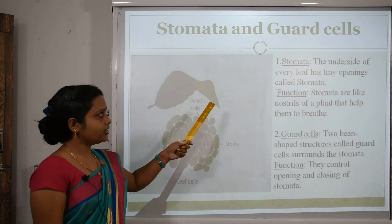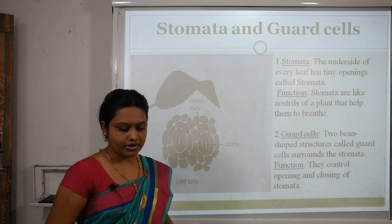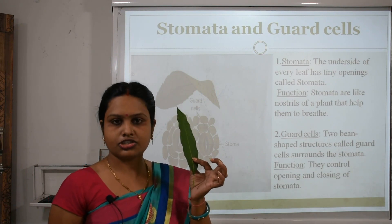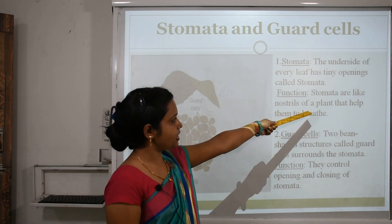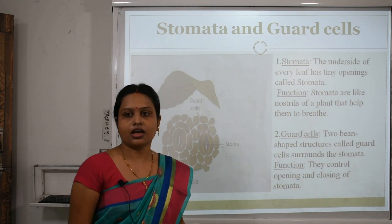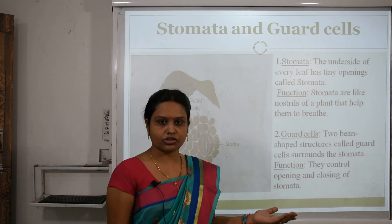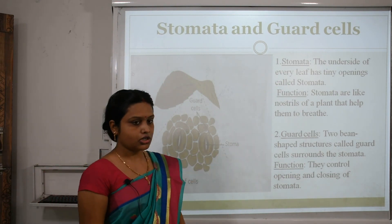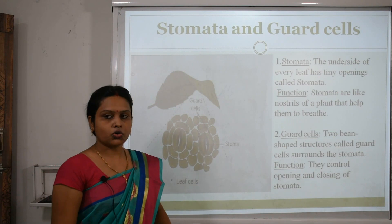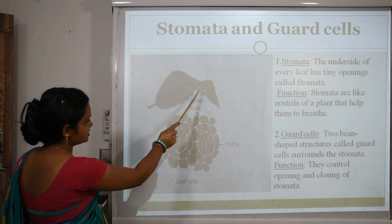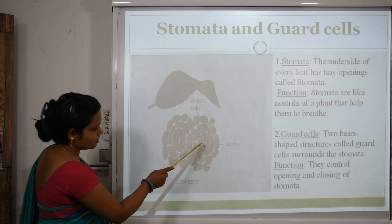Next are the stomata and guard cells. The underside of a leaf has tiny openings called stomata. Stomata are like nostrils of a plant that help them to breathe. Guard cells are two bean-shaped structures that surround the stomata. They control the opening and closing of the stomata. See this diagram — this is the stomata and around the stomata are bean-shaped structures called guard cells.